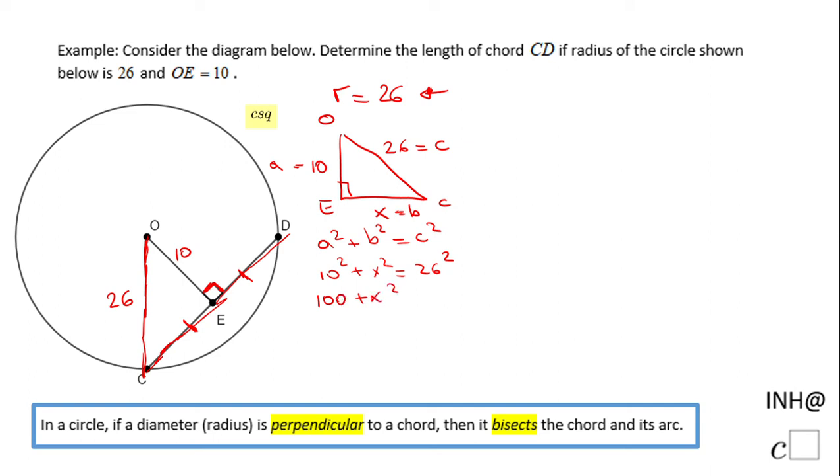For finding x², we just need to subtract 100 on both sides, and we have x² = 576. To find x, we need to take the square root of 576.